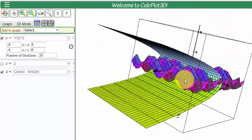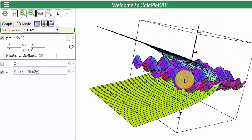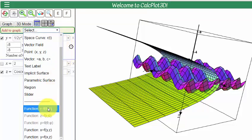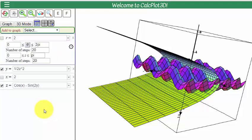The final thing I want to show you is sketching graphs of functions that are in cylindrical coordinates. So if I go to select on add to graph, and I scroll down, I can see function r equals f of theta z. I click that.